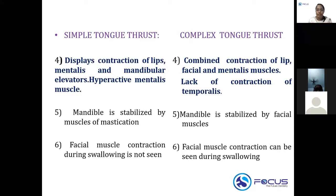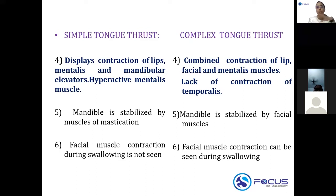To summarize: in simple tongue thrusting there is contraction of lips, mentalis, and mandibular elevators. In complex tongue thrusting there is combined contraction of lips, facial, and mentalis muscles, with no contraction of the temporalis muscle.